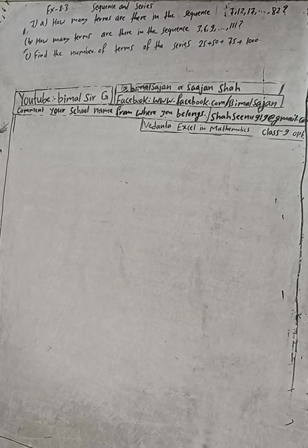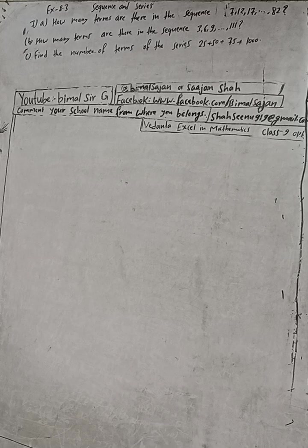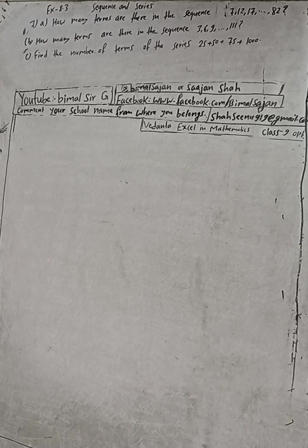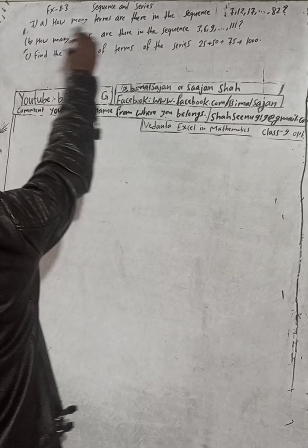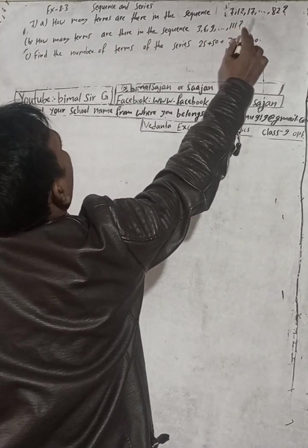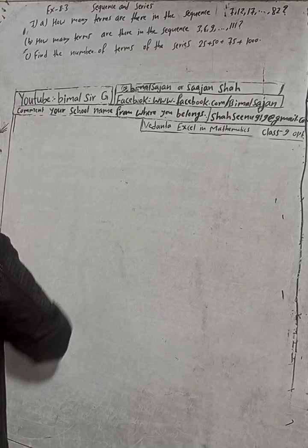Hi class 9 and 10 students, welcome back to Bimalsarji YouTube channel. This is question number 7, exercise 8.3, Vedant Excel in Mathematics class 9. Don't forget to check the playlist. The question is: how many terms are there in the sequence 7 to 117? So here the given sequence.